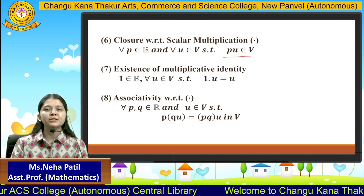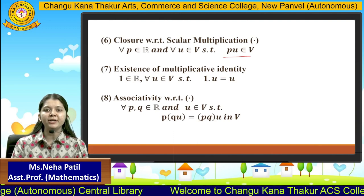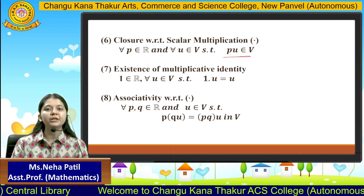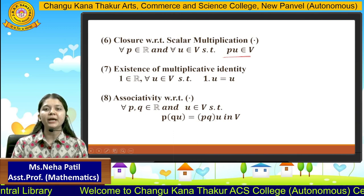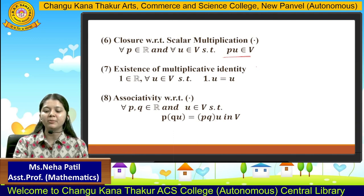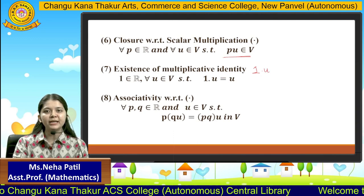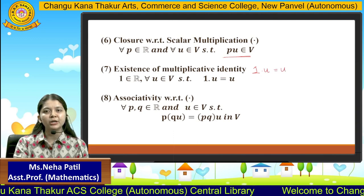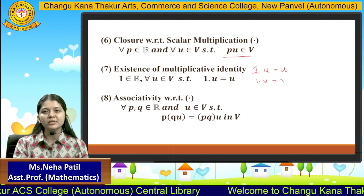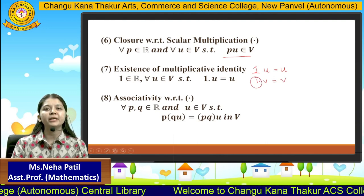The seventh property is the existence of multiplicative identity. We must find one identity element such that when it is multiplied with any element, the result is that particular element. The multiplicative identity is 1. If we compute 1 · v, the result is v. So 1 is the multiplicative identity.